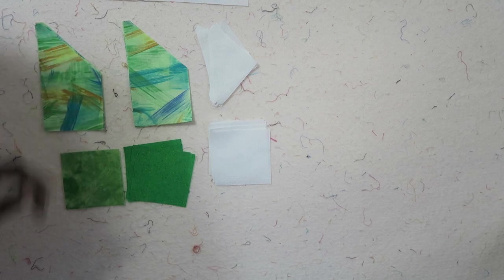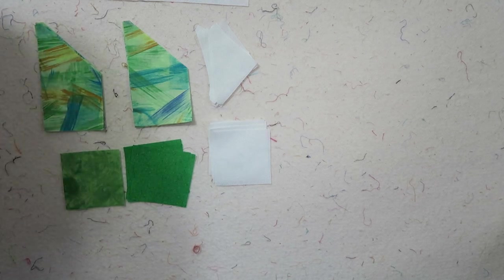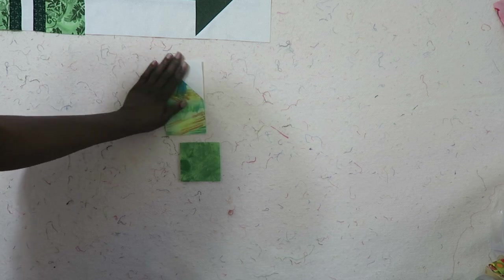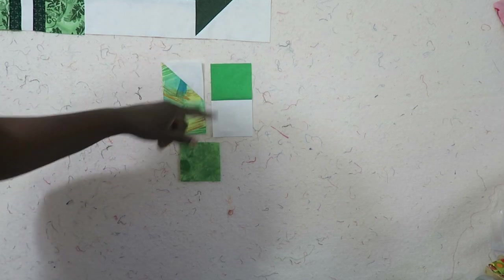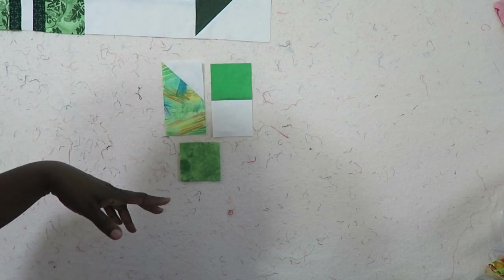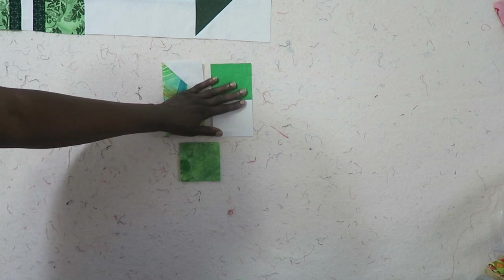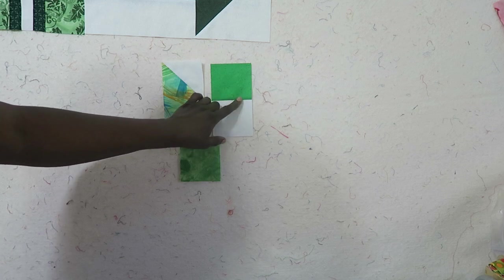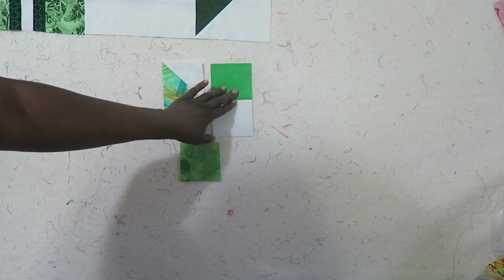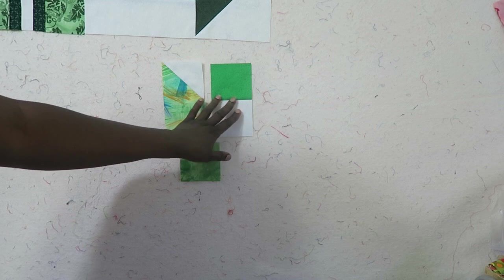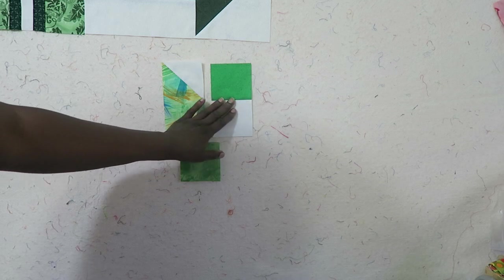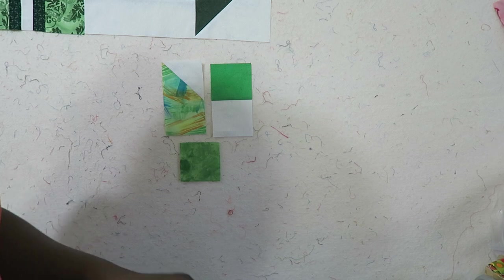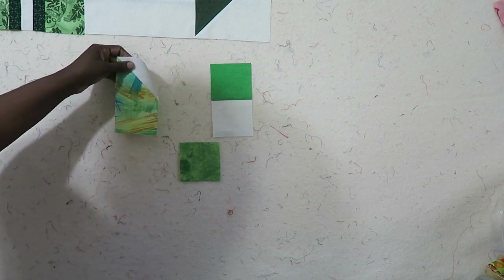I have all of my chisel units sewn. While I was sewing, I went ahead and sewed my green and white units together. On Nancy's instructions she tells you to strip piece these and that would be a great idea as well. I just made mine out of squares because I'm cutting fabrics from scraps and didn't have the strips this time. So now we'll just go ahead and lay this block out.